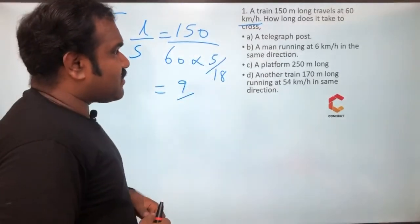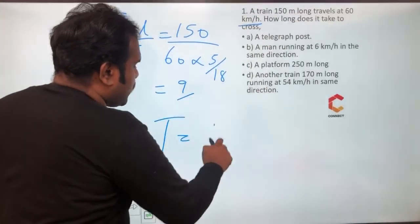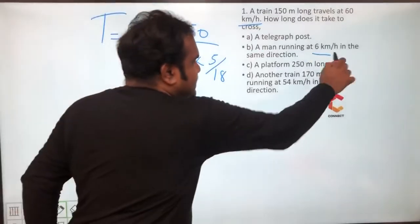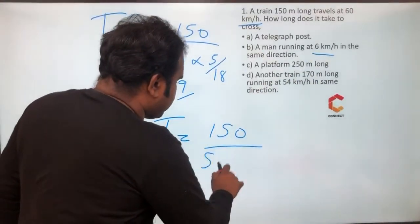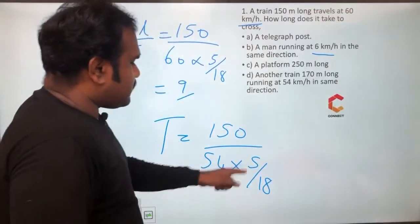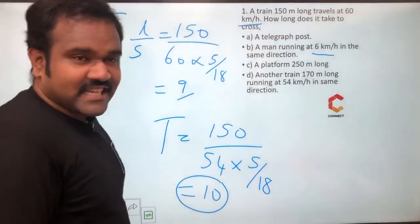Second case is a man running at 6 km in the same direction. So case number 3, time taken is equal to 150 by, train speed is 60, man speed is 6, same direction. So 60 difference 6 is 54, 54 into 5 by 18, which is nothing but 3 into 15, 10 seconds. So the answer for second case is 10 seconds.